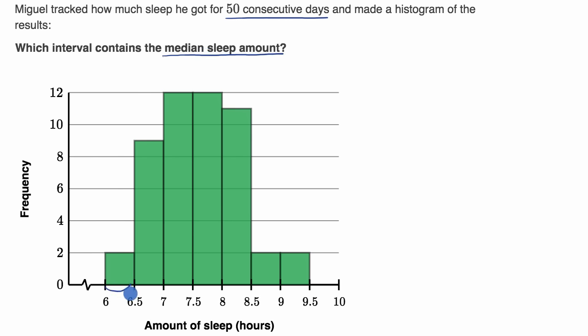And so they're saying is it this interval on the histogram, from six to 6.5, or this one, or this one, or any of these? Which of these intervals contain the median? Pause this video and see if you can figure that out.